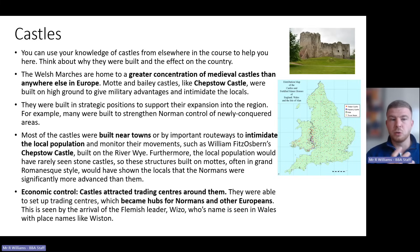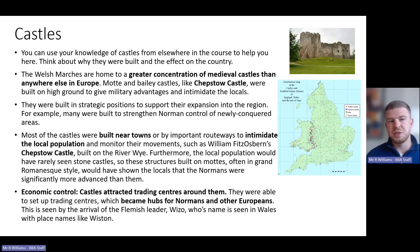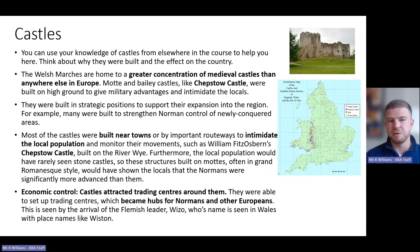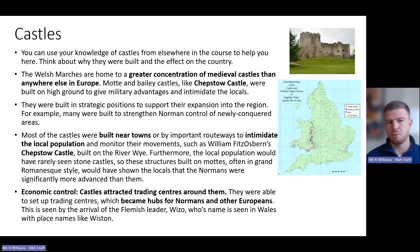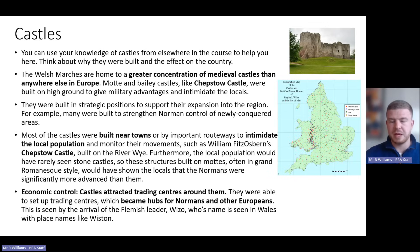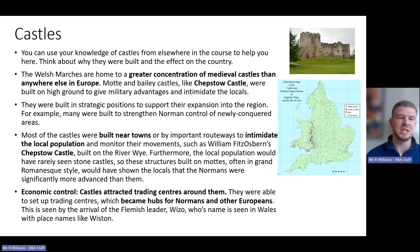William Fitz Osborne built Chepstow Castle on the River Wye, which allowed him to monitor any movement into the area he controlled. The local population would rarely have seen stone castles before, so these Romanesque buildings demonstrated how much more advanced the Normans were. Importantly, the castles also became economic centres of control — they attracted trading centres around them, making towns wealthier and drawing people from other parts of Europe, with Normans basing themselves in these newly set-up towns.